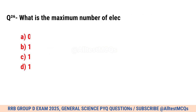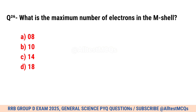Question No. 26. What is the maximum number of electrons in the M-shell? Correct option is D. 18.